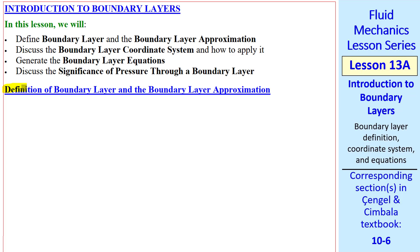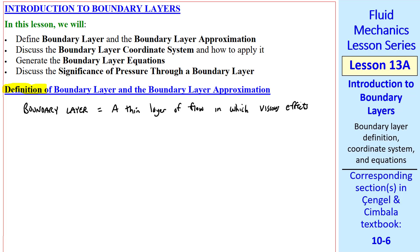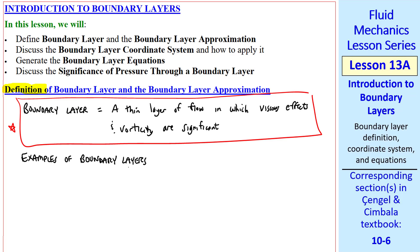First, a definition. A boundary layer is a thin layer of flow in which viscous effects and vorticity are significant. Here are some examples of boundary layers. I'll usually abbreviate boundary layer as BL.